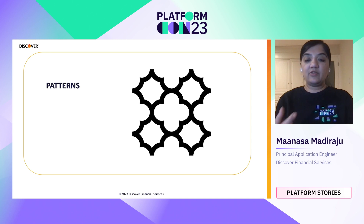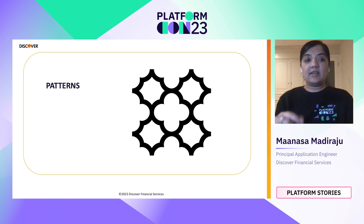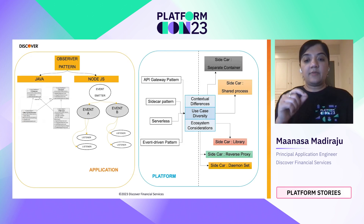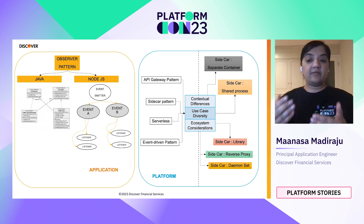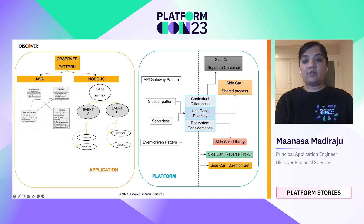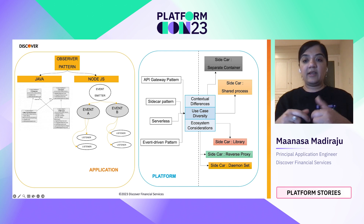As a software developer, I'm used to finding reusable patterns to commonly occurring software design problems. But from a platform context, I found that platform patterns needed to be adapted or applied in a different way than in traditional software development. Let's take an example of the observer pattern. The observer pattern defines a one-to-many dependency between objects, so if one object changes state, all its dependents are notified and updated automatically. The implementation details may differ between Java and Node.js, but the basic concept remains the same. However, that might not be the case when you're building platforms — platform patterns are useful, but they often need to be adapted or applied in a different way.